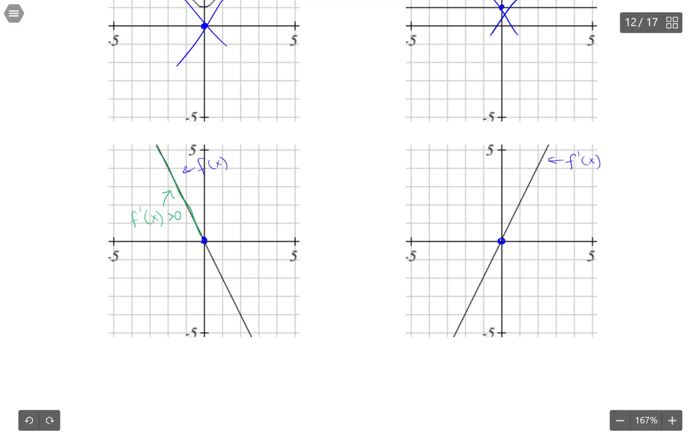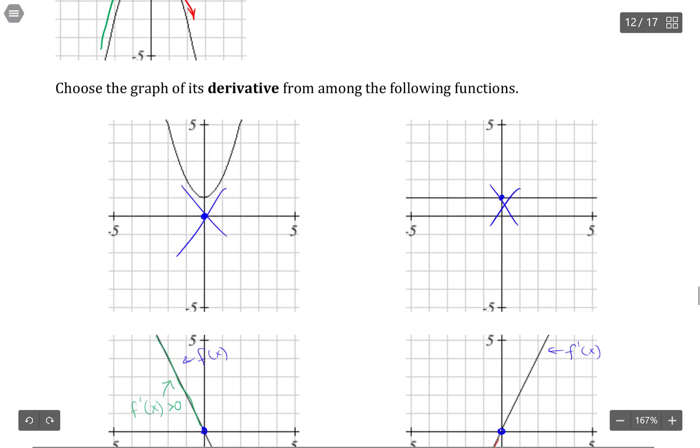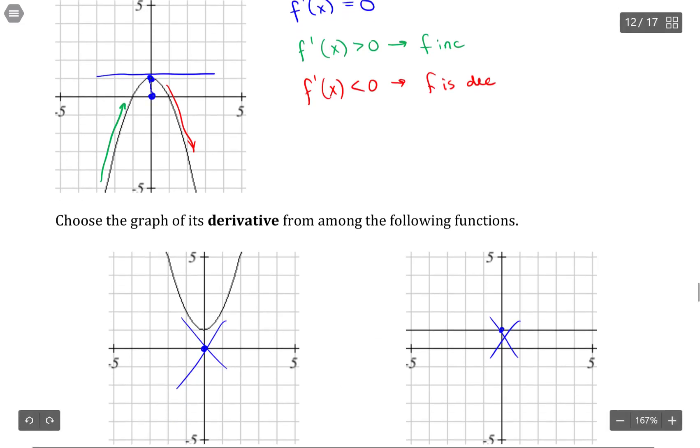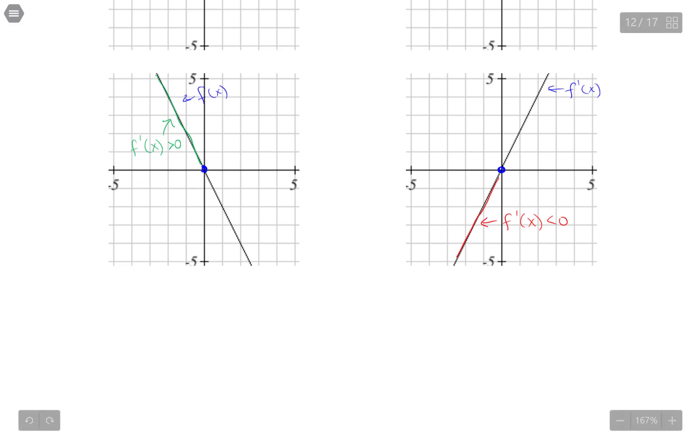Down here, this doesn't match up because on this interval, the first derivative is less than zero. But what we said is, from our function, we wanted the first derivative to be greater than zero on the interval from negative infinity up to zero, and that's the case in this particular graph here.